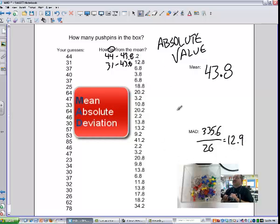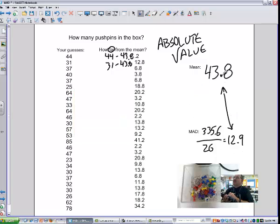So that meant that, on average, the average person, the average guess was 12.9 away from the average. So the average difference between all of these guesses and the average number was 12.9. So given about 43.8, that means that most of us guess someplace between 31 and 55. Something like that. So that's how to find the MAD.